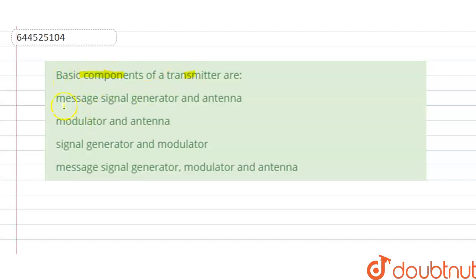Hello students, today our question is: Basic component of the transmitter are: A, B, C, D options are given here. So we have to find the correct option.